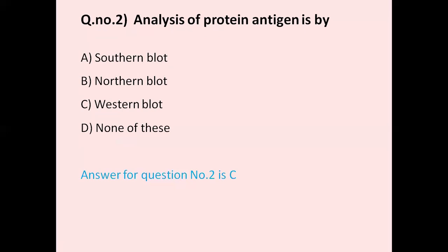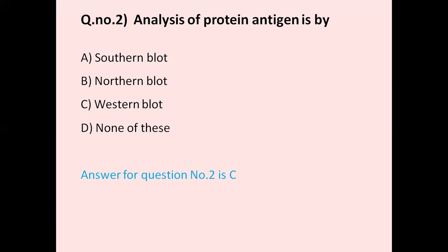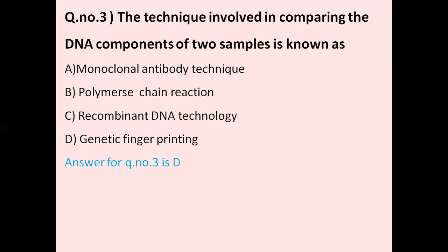Second question: Analysis of protein antigen is by option A Southern blot, option B Northern blot, option C Western blot. These are three main blotting techniques — Southern, Northern, and Western. Blotting means transfer membrane for analysis of protein, DNA, and RNA. The correct answer is Western blot. Western blot is for analysis of protein. Southern blot is analysis of DNA, and Northern blot is analysis of RNA. The correct answer is Western blot — analysis of protein antigen.